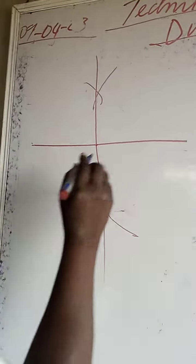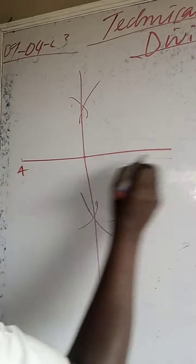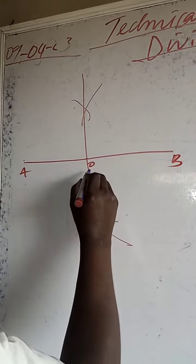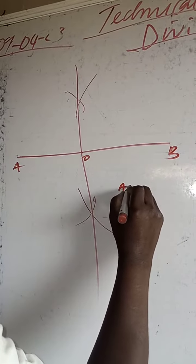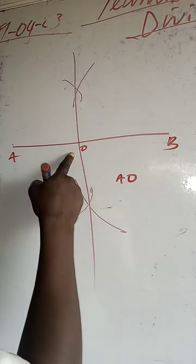When you take the measurement from here to here, let's say if this is A, this is B, and this is O. A to O, and from here to here will be O to B.